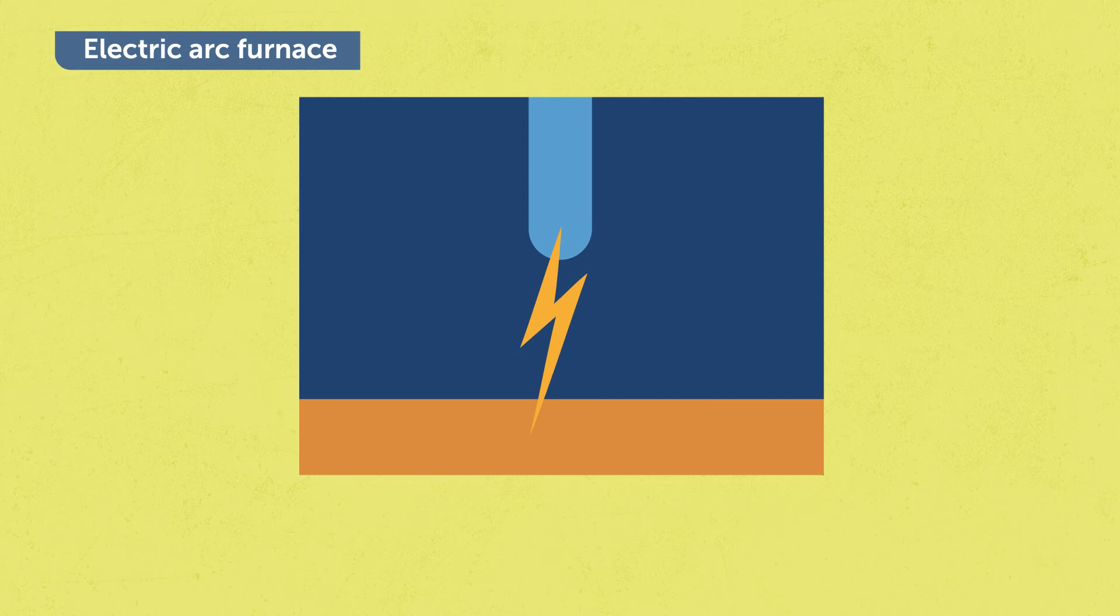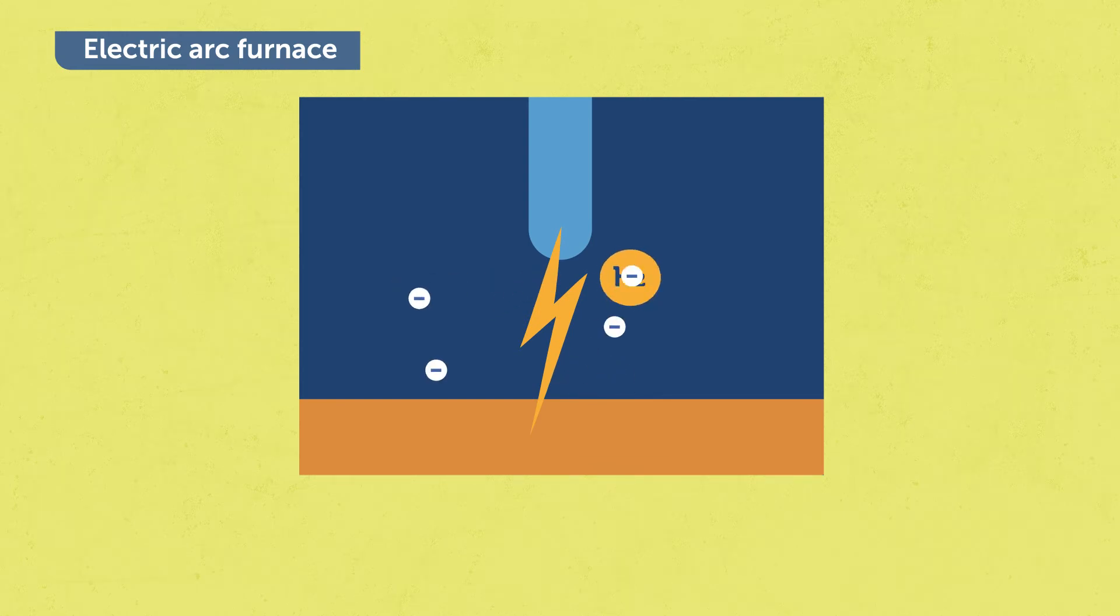And inside this arc, electrons can collide with hydrogen molecules and even argon. And the product of these collisions is that hydrogen can be broken apart as hydrogen plasma species, as atoms or even protons.